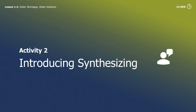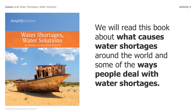Next, we are going to be synthesizing. This is the book that you're going to be reading from today — it's about what causes water shortages around the world and some ways that people deal with those water shortages. This is Water Shortages and Water Solutions. If you take a look at the cover, it looks like a rusted-out boat. But what do you notice over here? It looks like a desert or a beach — what would a boat be doing there? I'd bet you that at one time there was water and it's kind of gone away.